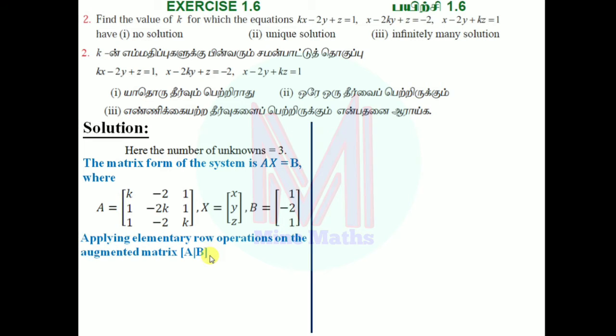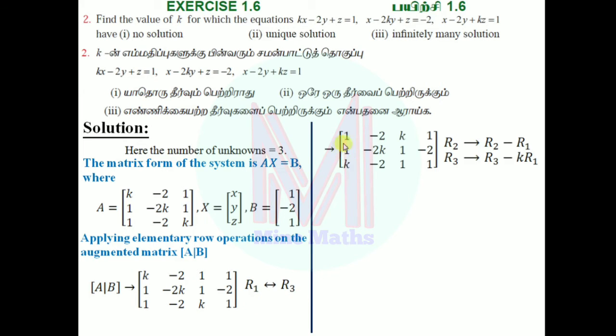We'll use an augmented matrix. The matrix form of the system is: [k, -2, 1 | 1; 1, -2k, 1 | -2; 1, -2, k | 1]. Applying elementary row operations on the augmented matrix [A|B], R2 → R2 - R1 and R3 → R3 - k·R1.